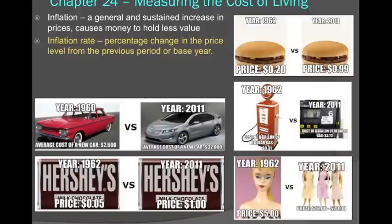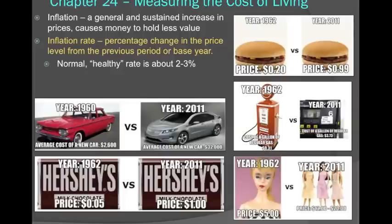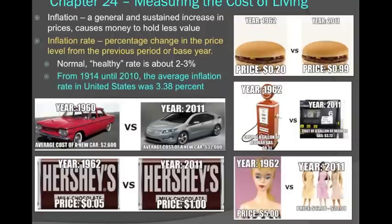We measure the percentage change based on what we call the inflation rate. You've already learned one index called the GDP deflator, which showed us how prices go up and down over time. In this chapter, we're going to look at the second index, known as the Consumer Price Index. A normal healthy rate of inflation is about 2 to 3 percent. In fact, if you look at the United States from 1914 to more current times, the average rate of inflation was about 3.38 percent. Most economists argue that a normal healthy rate of inflation is about 2 to 3 percent.